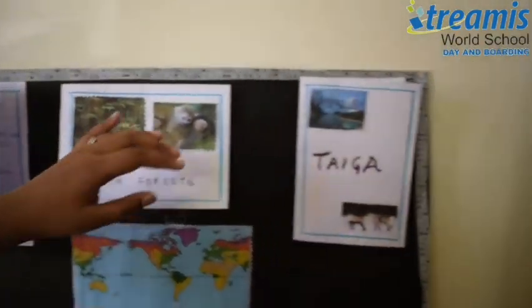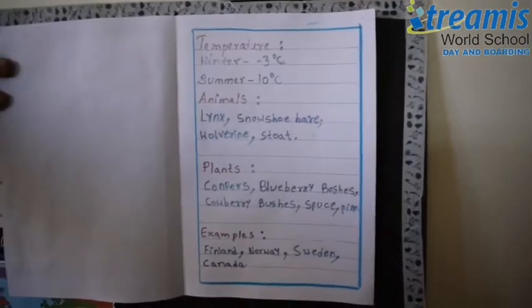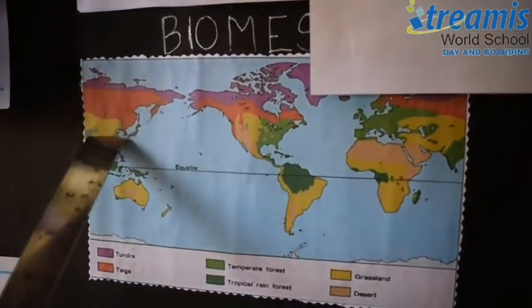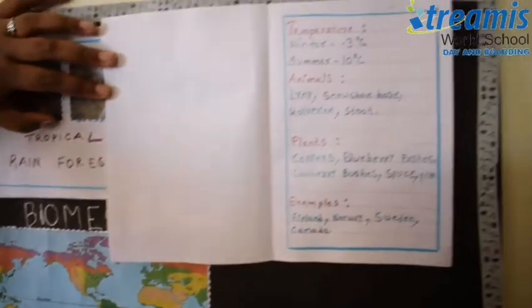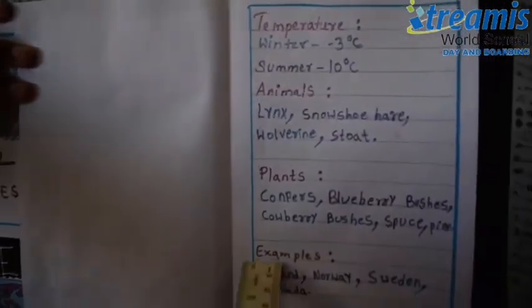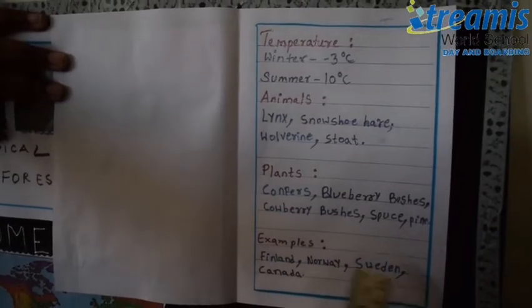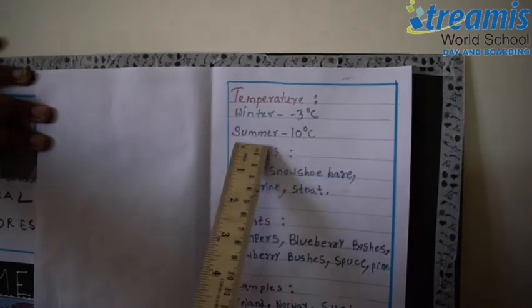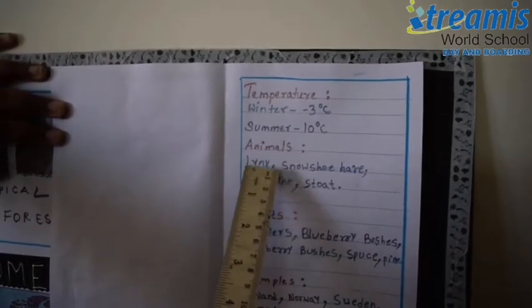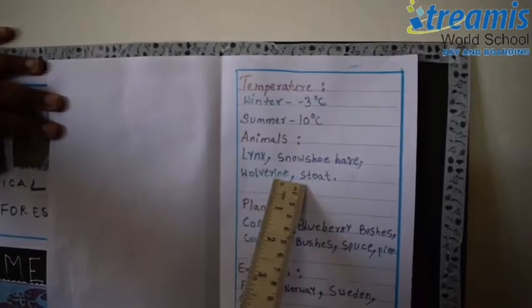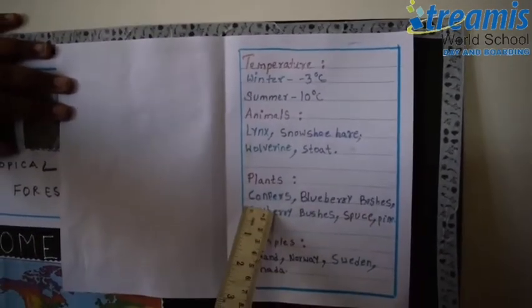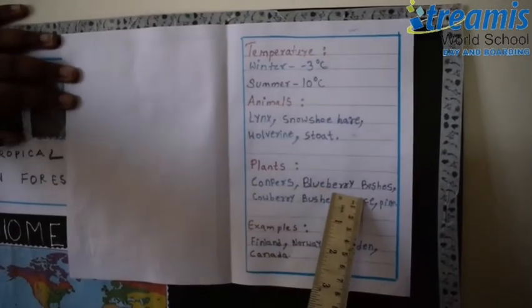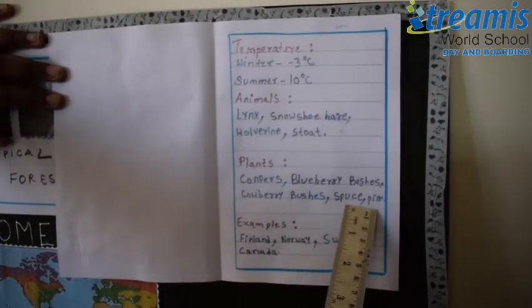Now let's go to taiga. The taiga is located just south of the tundra. A few places where you can find the taiga are Finland, Norway, Sweden, and Canada. The temperature in the taiga in winter is minus 3 degrees Celsius and in summer it is 10 degrees Celsius. Few animals that live there are lynx, snowshoe hare, wolverine, and stoat. Few plants that grow there are conifers, blueberry bushes, cowberry bushes, spruce, and pine.